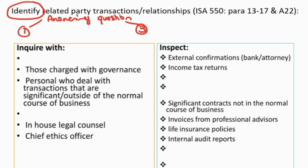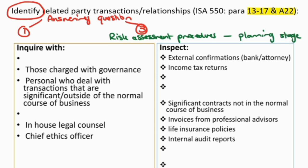The standard literally gives us lists of ways to go about trying to find related party transactions. This would form part of the procedures I would do as risk assessment procedures in the planning stage, so that I know what related party transactions they had during the year and all their different related party relationships. As part of a risk assessment procedure, I can inquire with management as my first point of call, those charged with governance, and personnel who deal with transactions that are significant and outside of the normal course of business — because those are indicators of potential related party transactions.